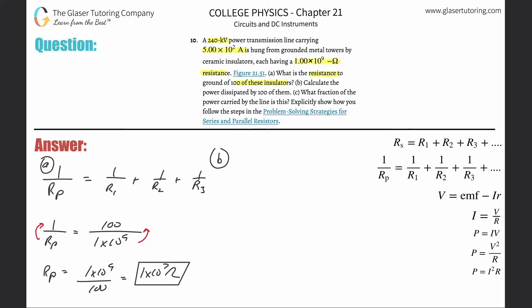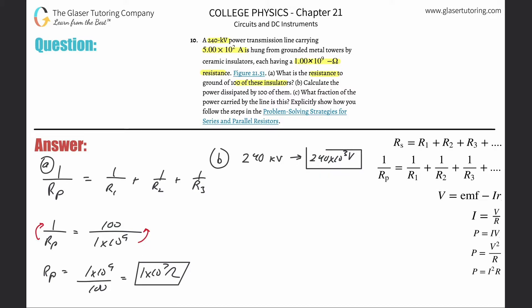Letter B says calculate the power dissipated by 100 of them. The power dissipated by 100 insulators is equivalent to using the equivalent resistance of all of them. If I know the voltage — 240 kilovolts, which is 240 times 10 to the 3rd volts — and I know the equivalent resistance, I can find the total power. The total power equals the voltage squared divided by R_P.